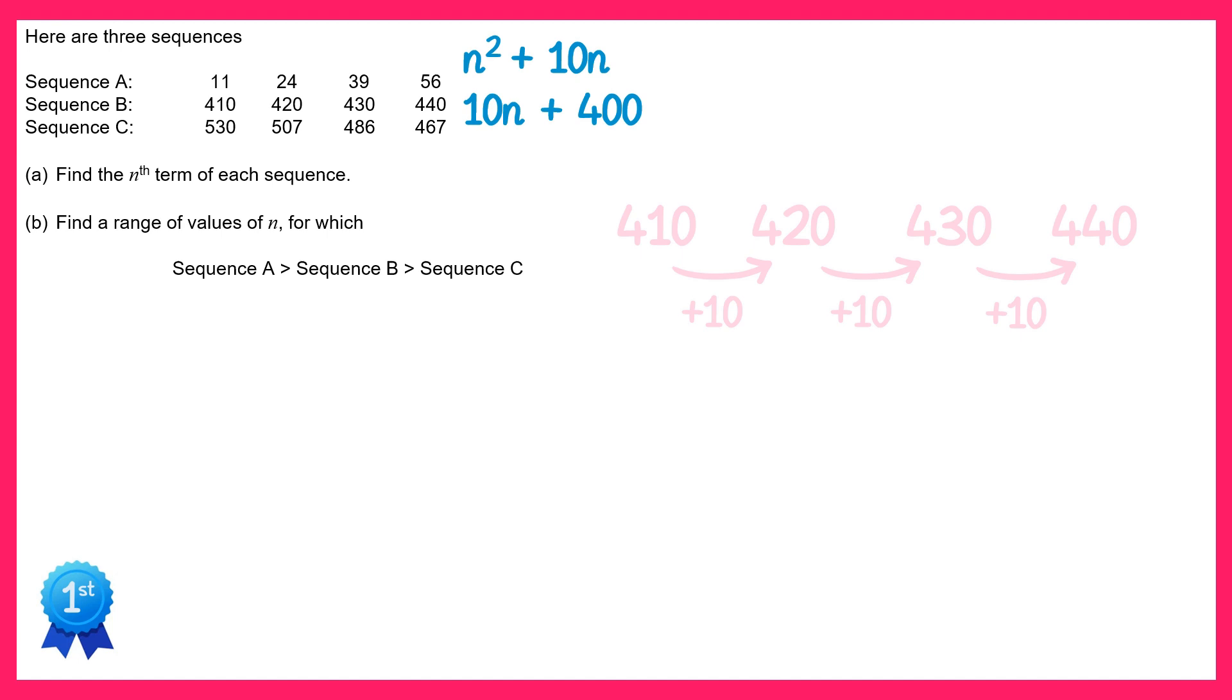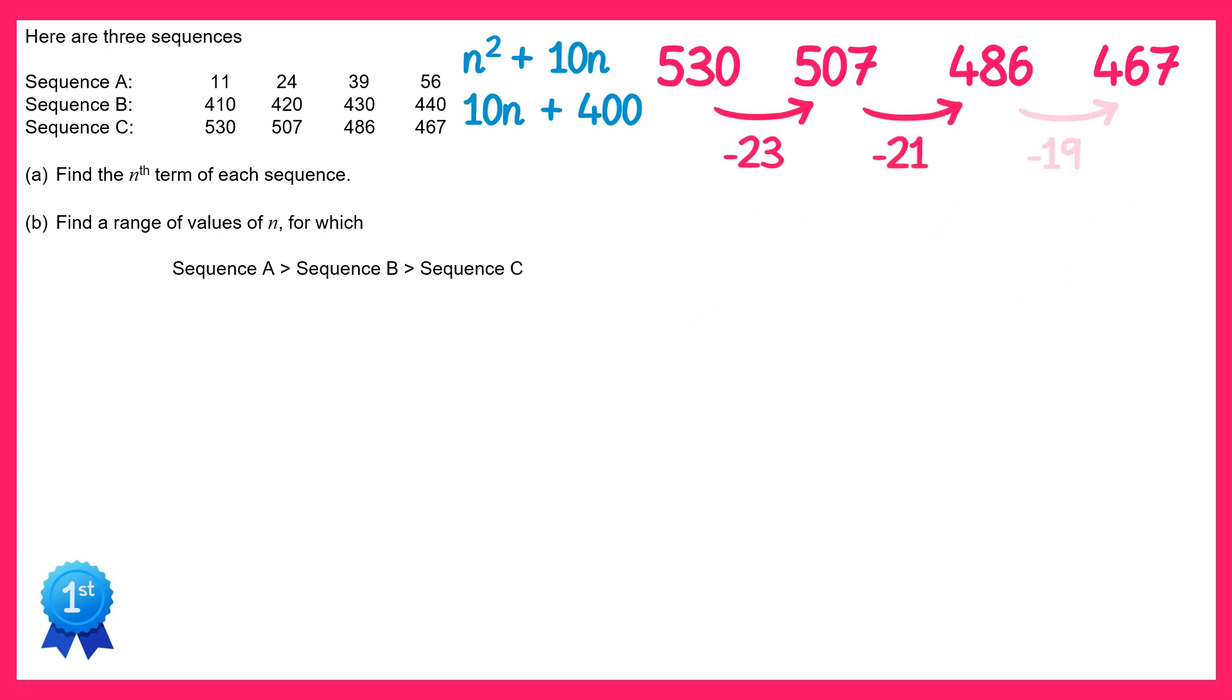And finally for sequence C. For sequence C we'll look at the differences again. This time we're subtracting, and it's subtract 23, subtract 21, and subtract 19. Now just like sequence A, we don't have a common difference here, so it's not a linear sequence. We need to check the next difference to see if it's quadratic. And if we do those second differences, we find plus 2 and plus 2. So it is a quadratic sequence.